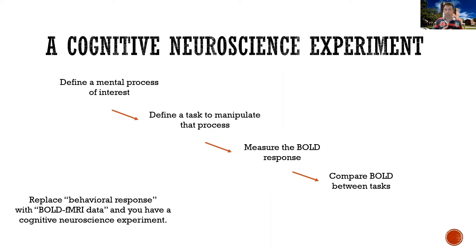You compare the BOLD response to sentences in condition A — the BOLD response when there was no ambiguity — to the BOLD response to sentences in condition B, when there was ambiguity. You compare the two, and you find that there's some part of the brain specifically responsive to sentences that contain ambiguity. This is the logic behind a vanilla cognitive neuroscience experiment.